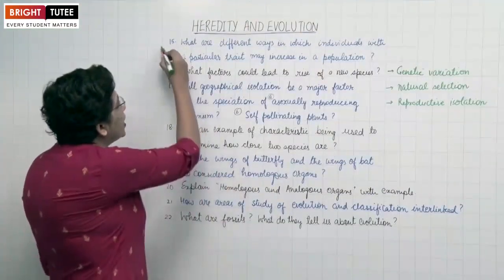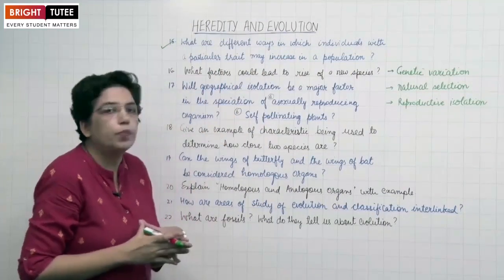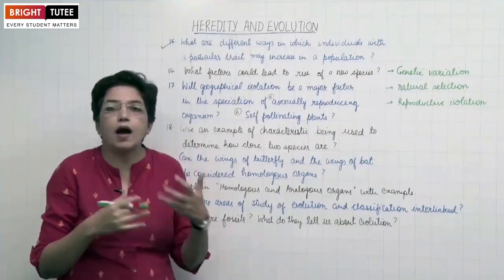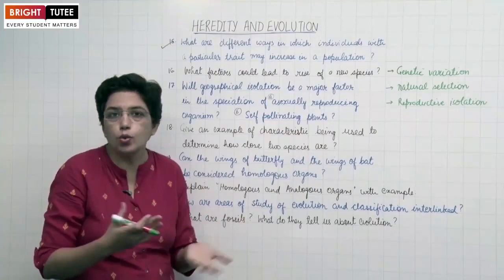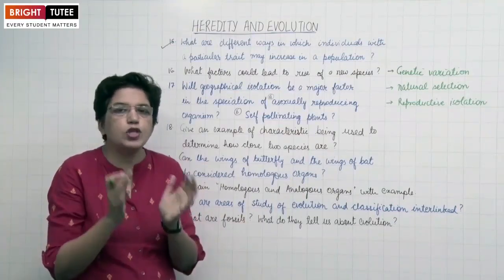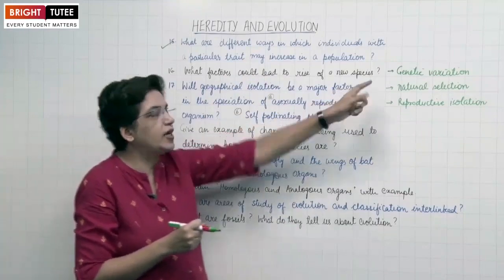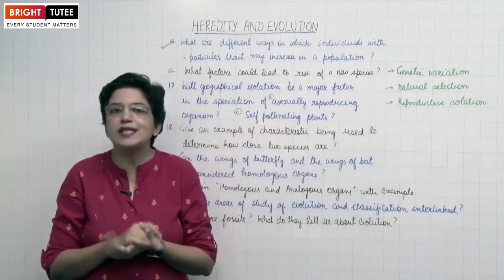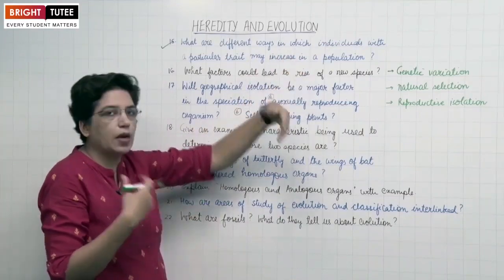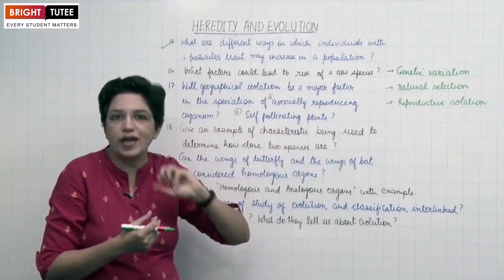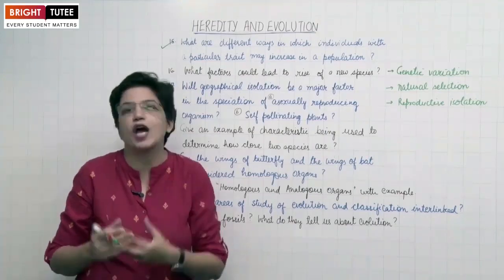Next question: What are the different ways in which individuals with a particular trait may increase in a population? Variations occur after each generation in a very slow process not noticeable in one or two generations. One way is genetic variation and natural selection — as in the example of green beetles, they will survive in the coming population because they have a favorable genetic variation. This is also called natural selection because nature selects those which have favorable variations.